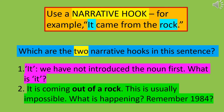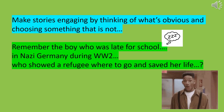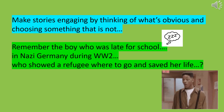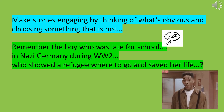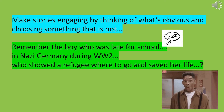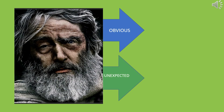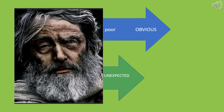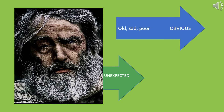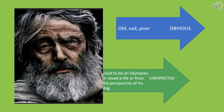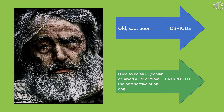It's important to make stories engaging by thinking of what's obvious and choosing something that's not. For example, remember when we read about the boy who was late for school? That's a bit boring, but the story was set in Nazi Germany during World War Two, and during the day he showed a refugee where to go and saved her life — that made the story a lot more engaging. What would be the obvious things to write about this picture? What would be unexpected? The obvious would be that he's old, sad, or poor. The unexpected might be that he used to be an Olympian, saved a life, or the story could be from the perspective of his dog.